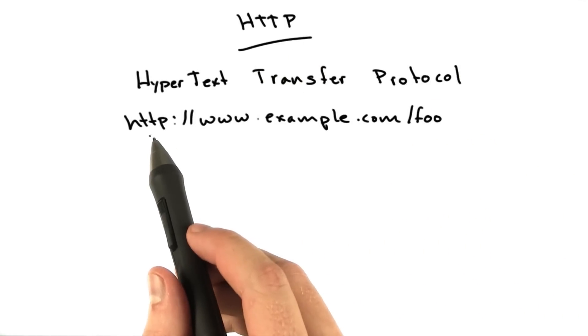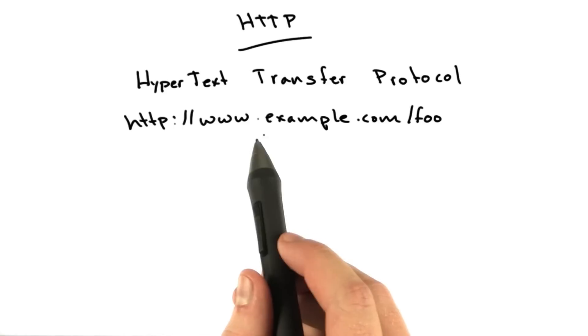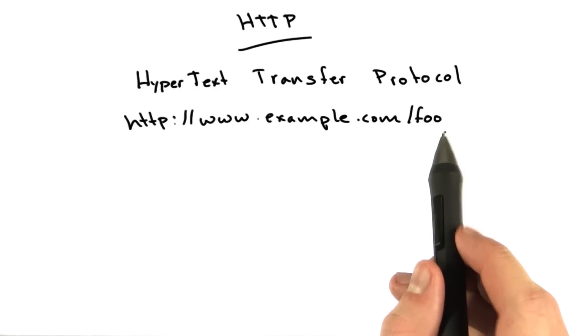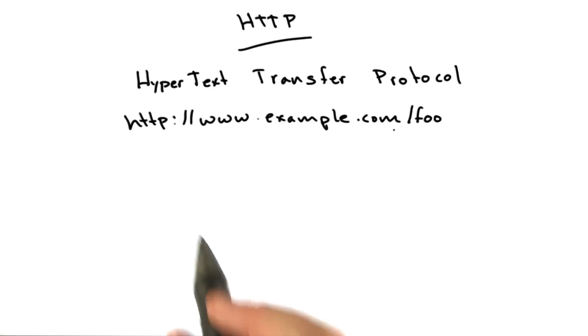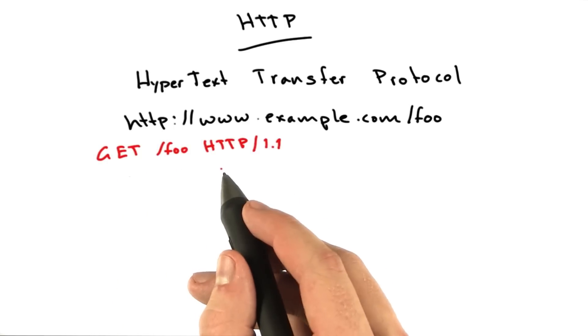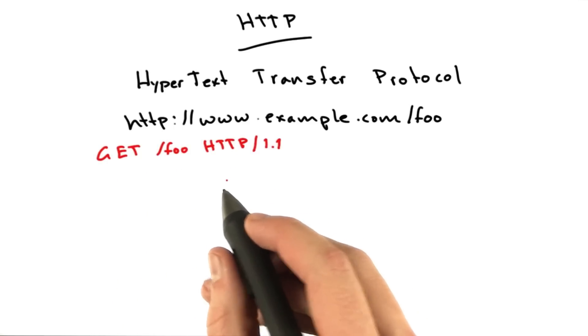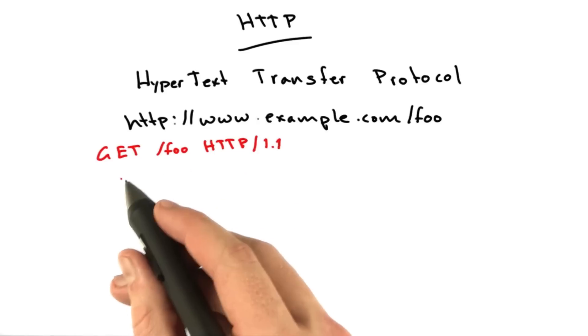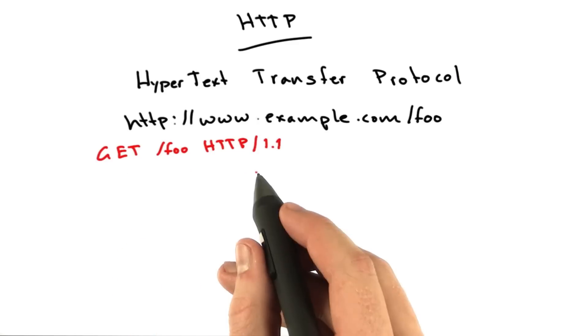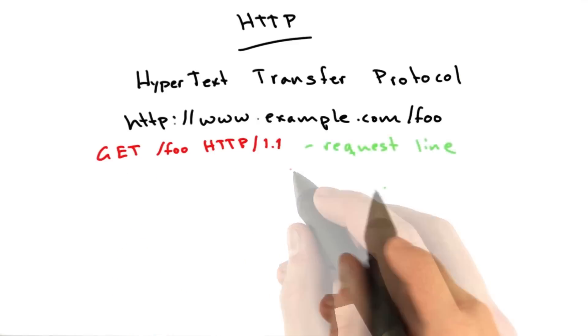The request from your browser for the URL www.example.com/foo begins with a request line. It looks something like this. This is the request line. Now, HTTP is a very simple text protocol. So this text is sent over the Internet to the server just like this. It's human readable too.